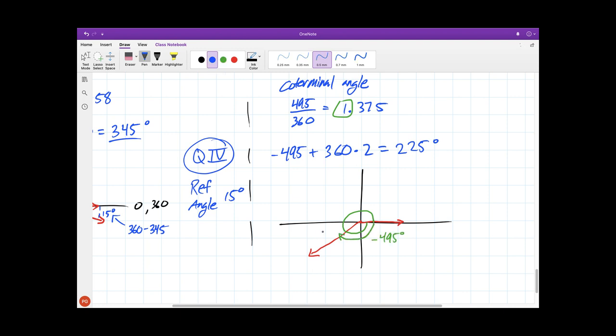Now to help us find our reference angle, remember that this is coterminal to 225 degrees. We know that a half turn is 180. So how big does this have to be to get in between the two of them? Well, it would have to be the difference here, which would be equal to 45 degrees. And we find ourselves in quadrant three.